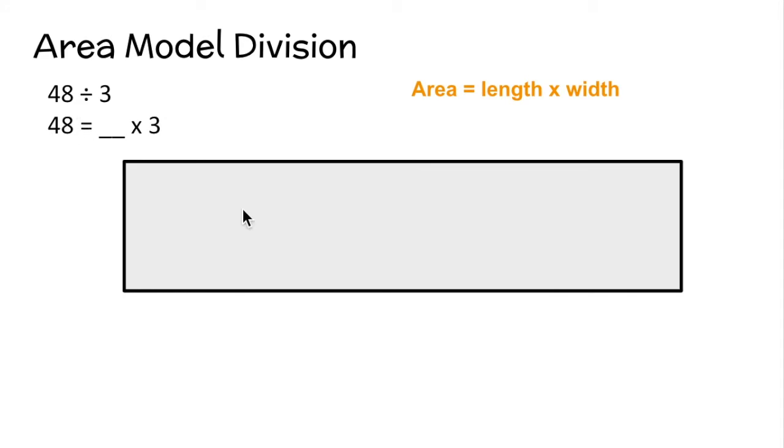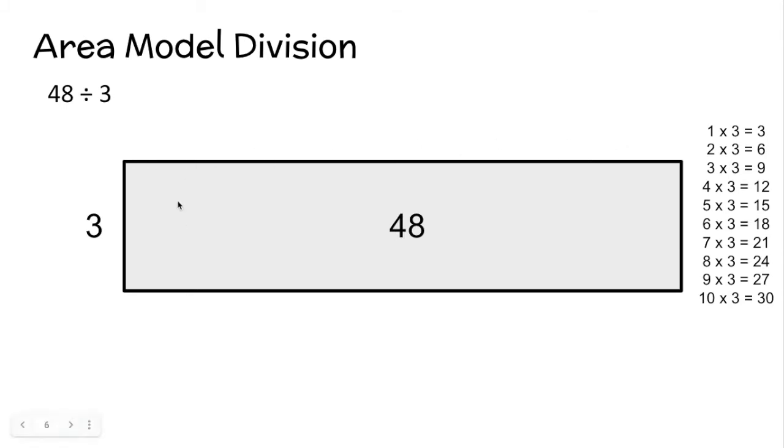Now, it helps to know your multiplication facts in order to get through this process, but something that I found that's helpful for me is if I list all of the multiplication facts of my divisor. So we're dividing by 3, so I listed all the multiplication facts for the number 3, at least from numbers 1 to 10. Blank times width equals 48. Something times 3 is going to give us 48.